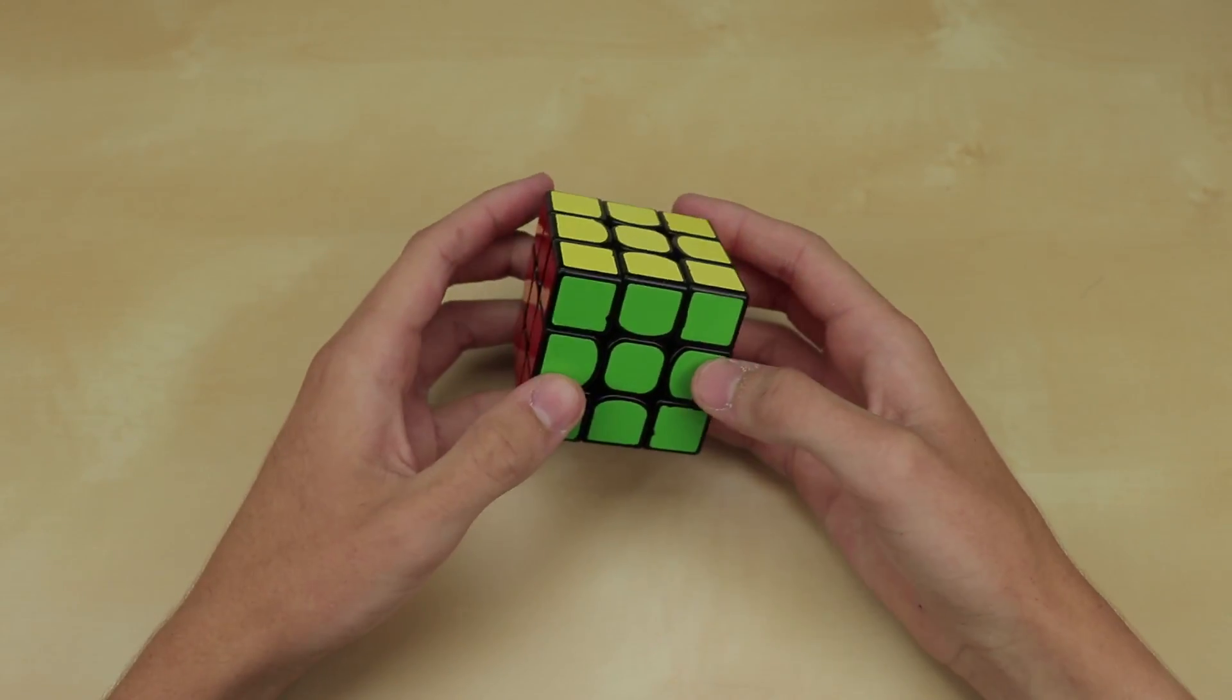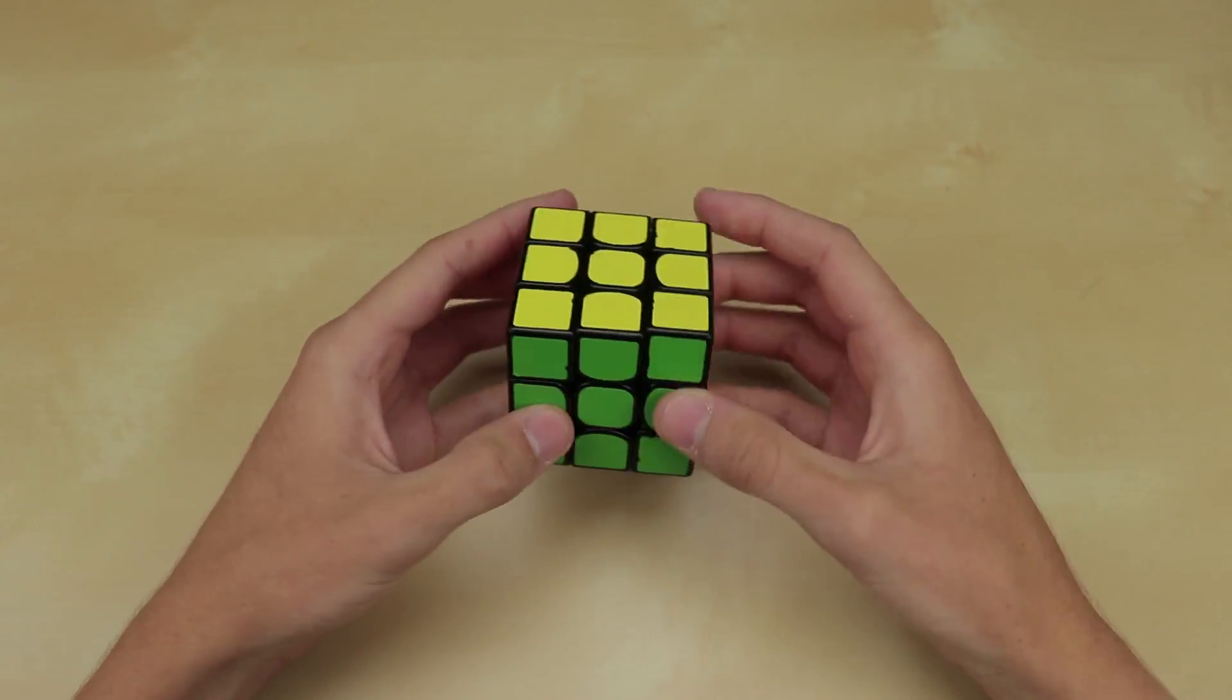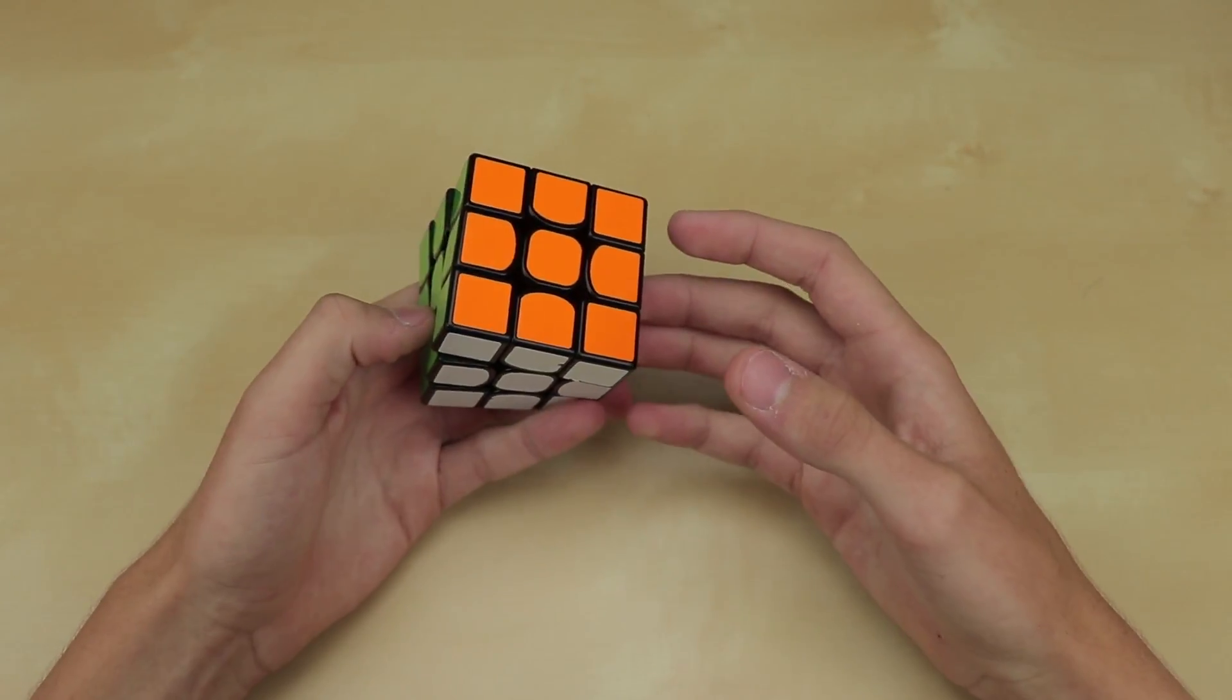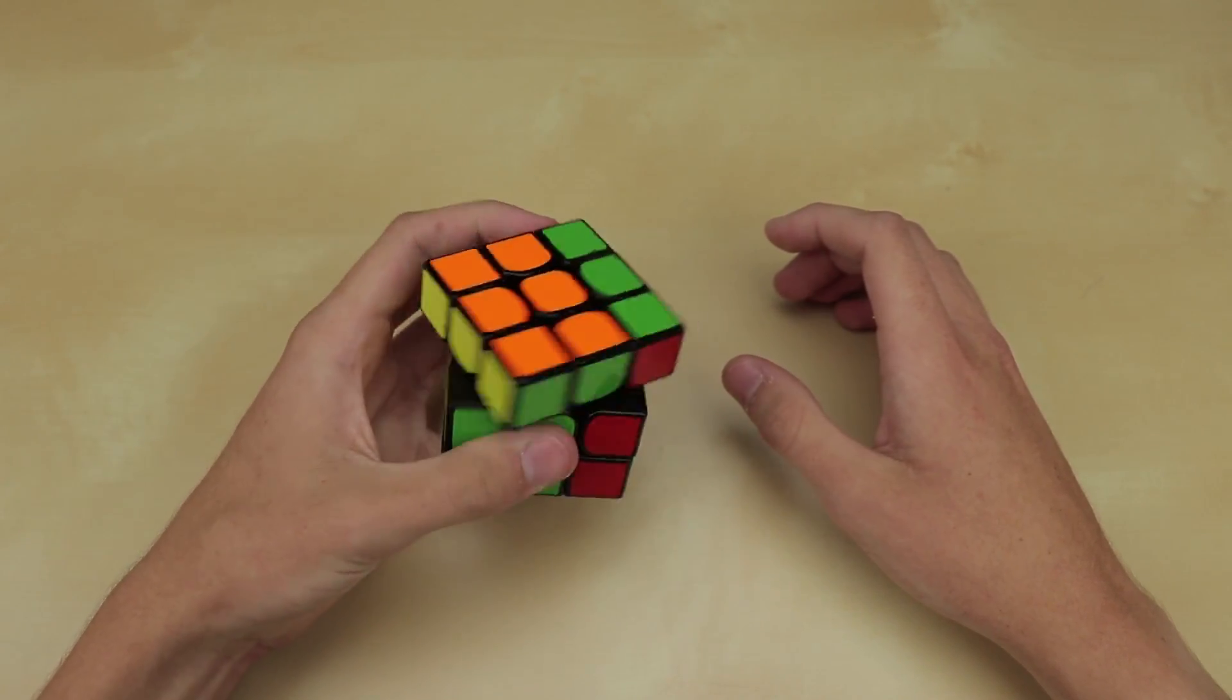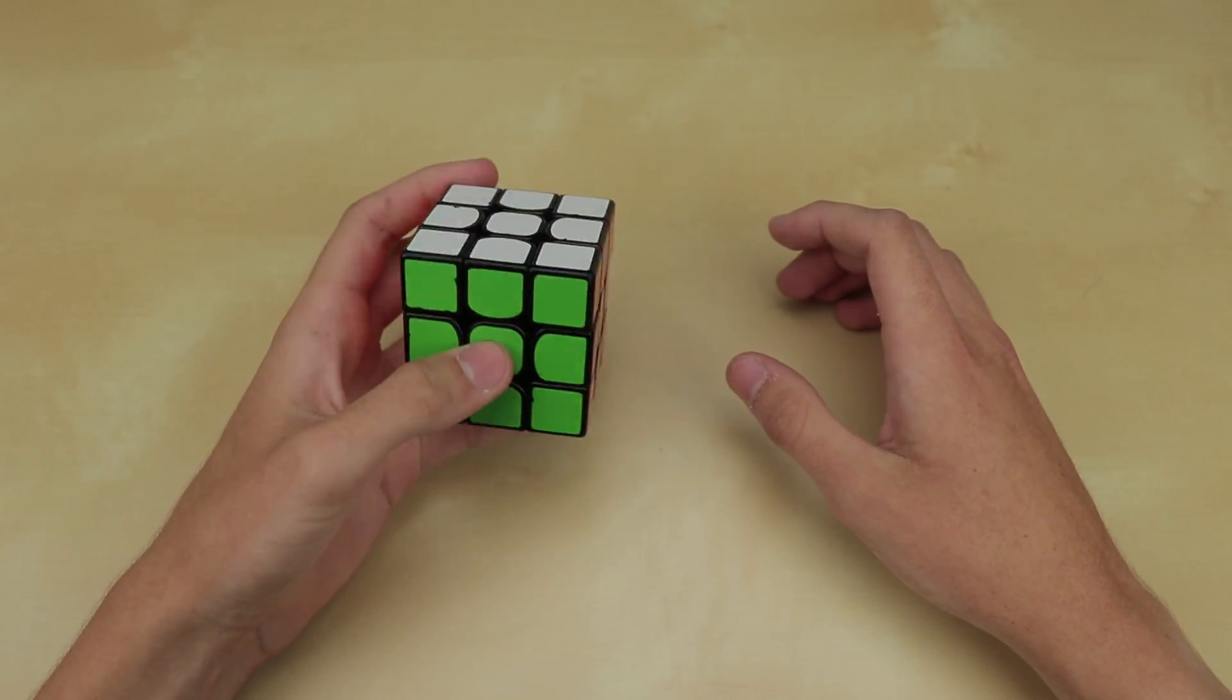But when it comes to two-handed solving, that method is only really good when you know how to do good block building, which personally I cannot do like at all. Really even one-handed it should only be good if you know how to do good block building, but I don't really actually do true ZZ.